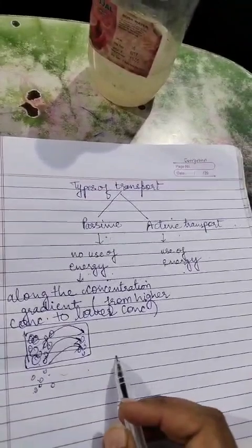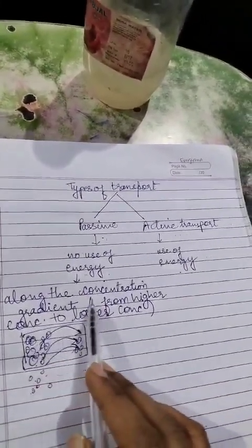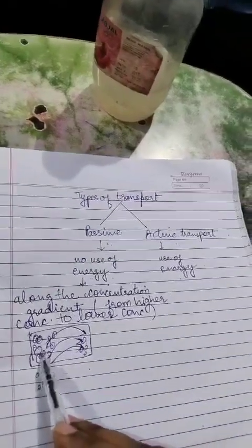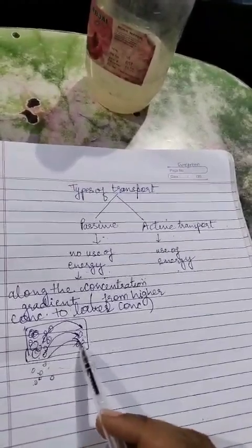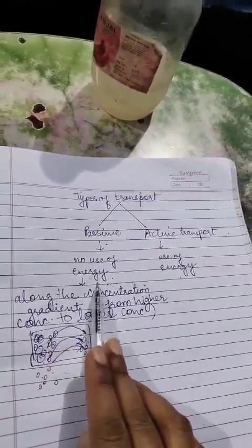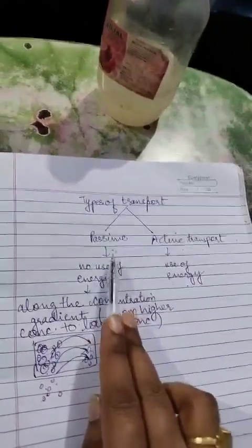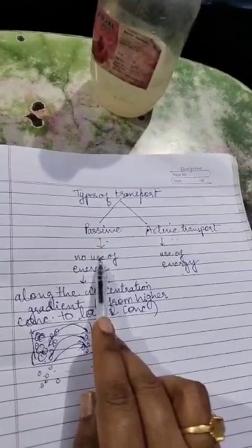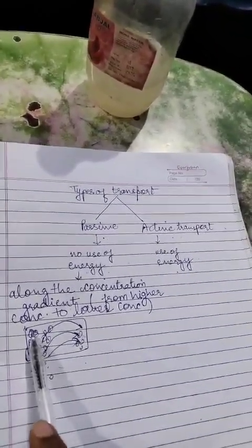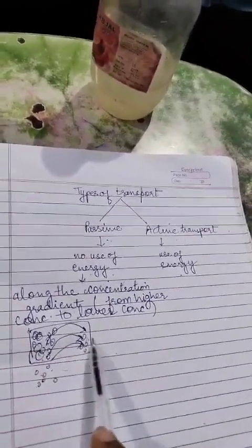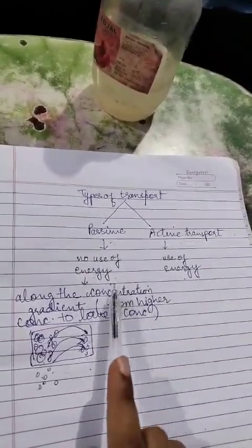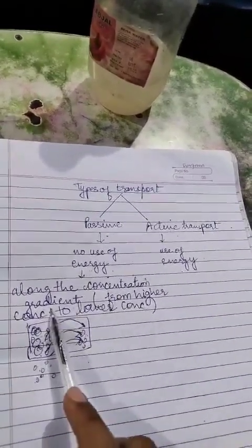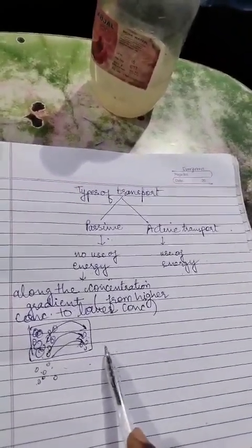From higher concentration to lower concentration, across the membrane, along the concentration gradient. Along the concentration gradient ka matlab hai — higher concentration se lower concentration ki taraf movement hota hai. And this means energy ka use nahi ho raha hai, so it is passive transport. Passive transport is the movement of molecules across the membrane along the concentration gradient, from higher concentration to lower concentration, without the use of energy.